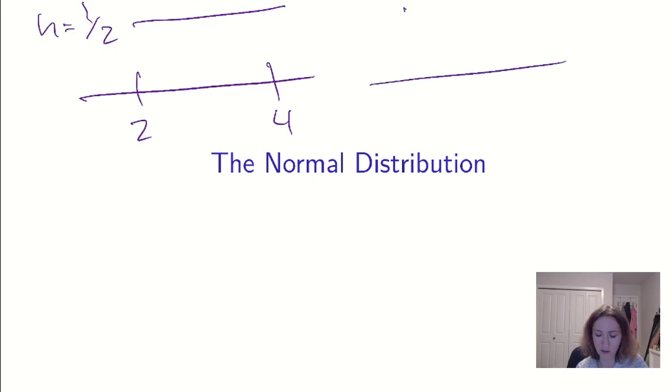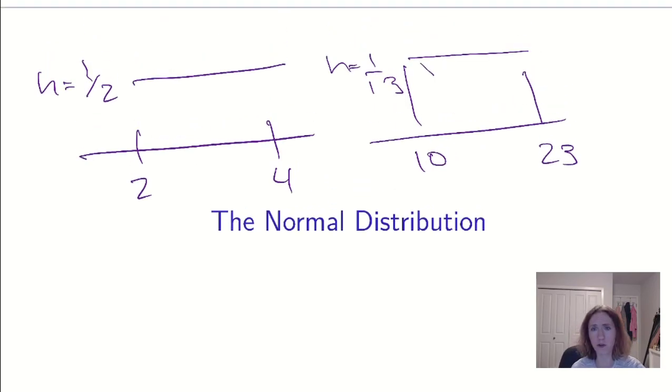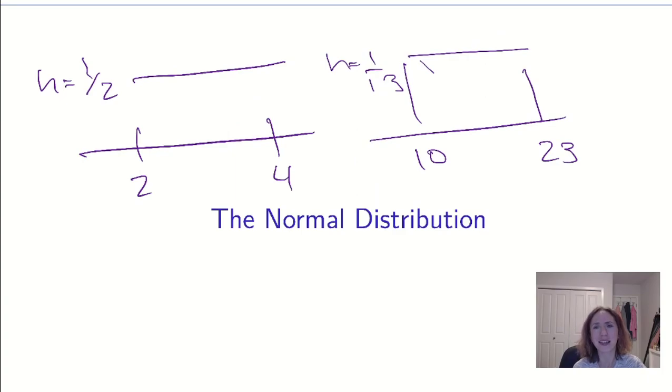So what we like to do is say, these are a bunch of situations that are different, but the difference is more or less a cosmetic one. When we're looking at uniform distributions, we have a uniform distribution from 2 to 4 with height 1/2, and we could have had a uniform distribution from 10 to 23 with height 1/13.